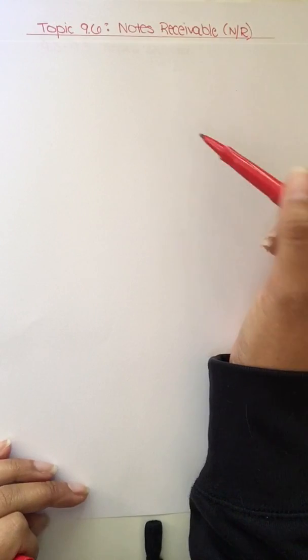Hello, welcome back to chapter 9. We're now going to topic 9.6, Notes Receivable, or NR for shorthand. This means that we're skipping topics 9.3 to 9.5, so you're not responsible for those.